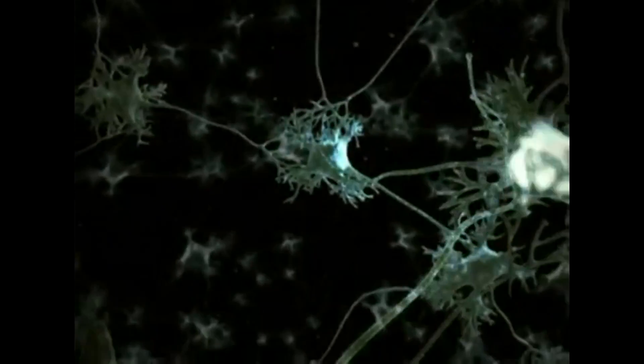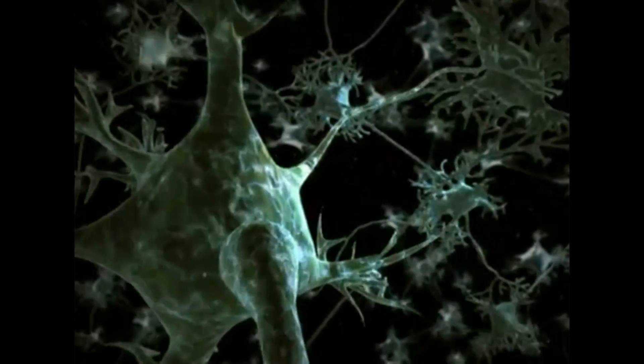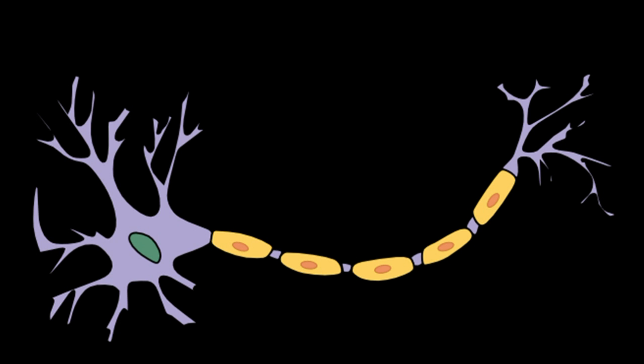The body's information system is built from billions of interconnected cells called neurons. A nerve cell or neuron consists of many different parts. The cell body or soma is the life support center of the neuron.